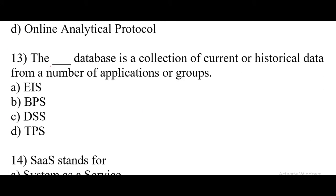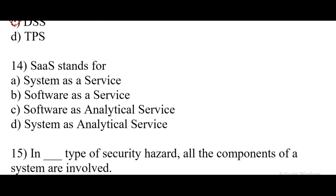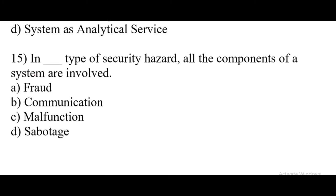Question number 13. The dash database is a collection of current or historical data from a number of applications or groups. Right answer is Option C: DSS. Question number 14. SaaS stands for. Right answer is Option D: Software as a Service. Question number 15. In dash type of security hazard, all the components of a system are involved. Right answer: Option C: Malfunction.